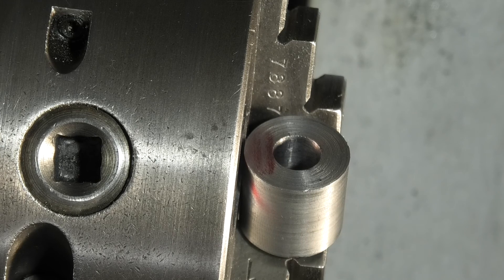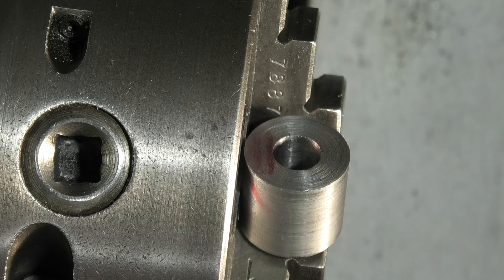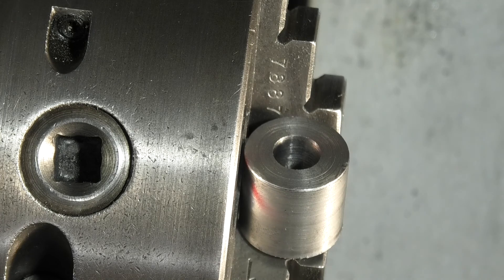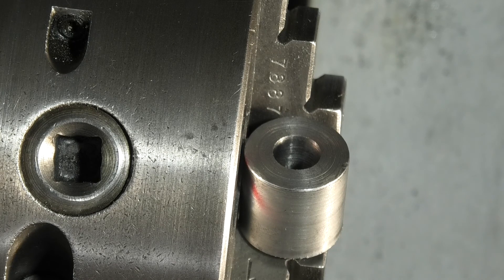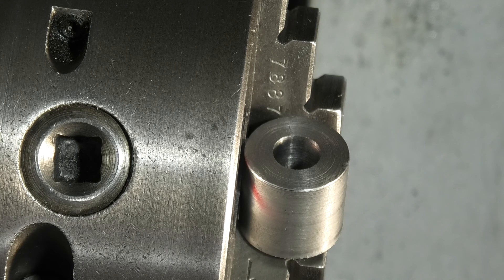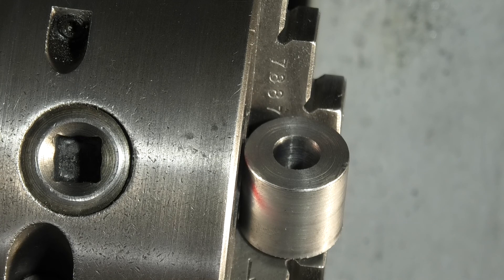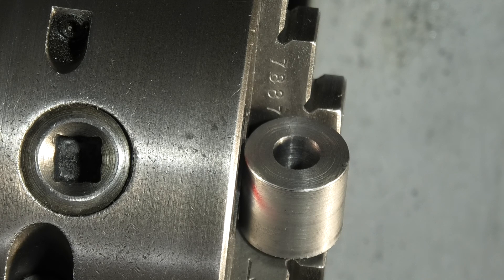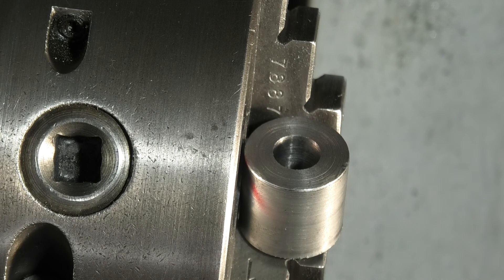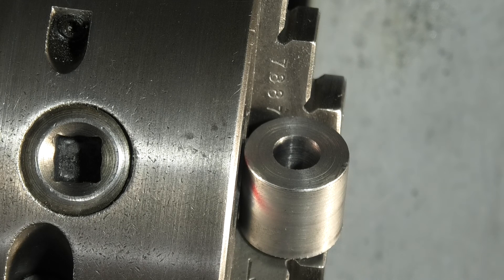That's the finish of the bore that was running out six thou, still a good finish. If I turn it over, that's the finish of the bore that was running true. So I don't think there's any difference in the finish. I haven't got surface finish measuring equipment, so I can't really tell you. It just looks the same, and I'm pleased that it's cut within a few tenths of the bore that was running true.